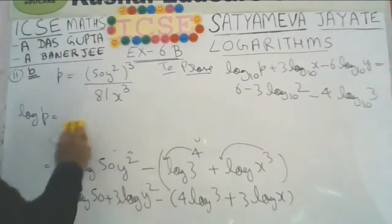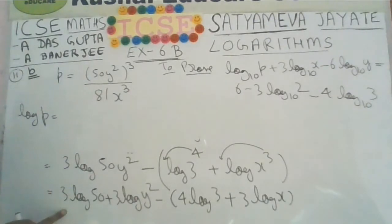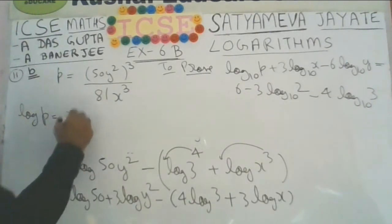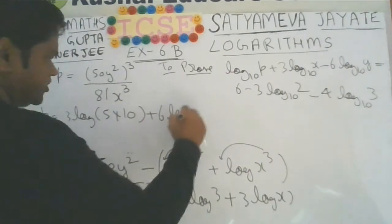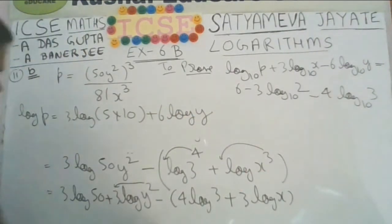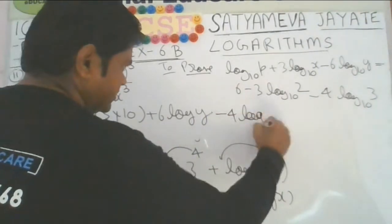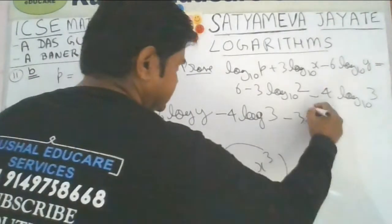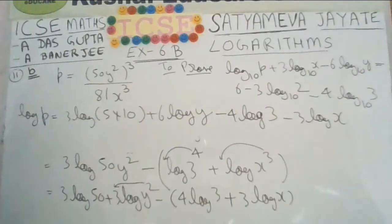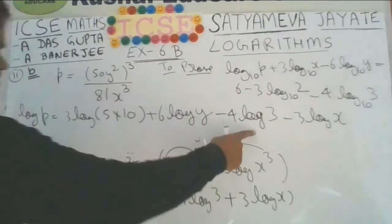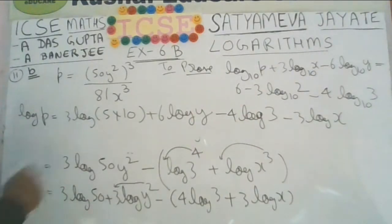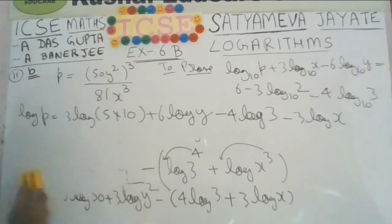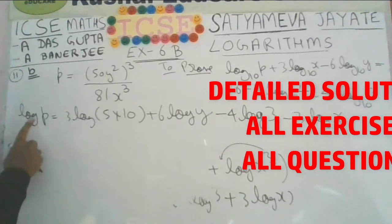Now 3 times log 50: write 50 as 5 times 10. The 2 from y squared comes in front giving 6 times log y. Then we have minus 4 log 3, and because of the minus, sign changes: minus 3 times log x. Note: if no base is written, it automatically means base 10. In the question, base 10 is written every time, but even if not indicated, base 10 is understood.